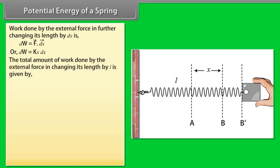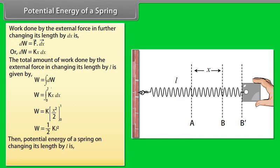Now the total amount of work done by the external force in changing its length by L is given by W is equal to integration of dw. By calculating it, we get W is equal to 1 upon 2kl square. Then potential energy of a spring on changing its length by L is potential energy is equal to W, potential energy is equal to half kl square.